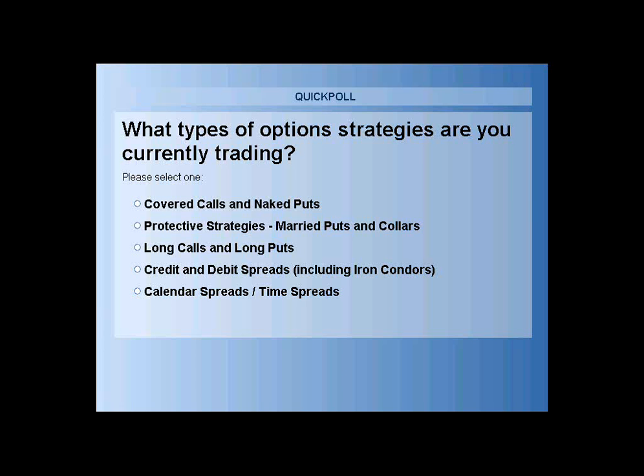Before I go further, I'd like to ask everyone what types of option strategies you're using right now. Are you mainly trading covered calls and naked puts? Protective strategies like married puts and collar spreads? Speculating with long calls and long puts? Trading credit and debit spreads including iron condors? Or doing calendar spreads — calendar calls, calendar puts, horizontal or diagonal time spreads? Let me know so I can gear the presentation accordingly.